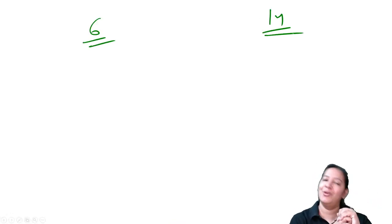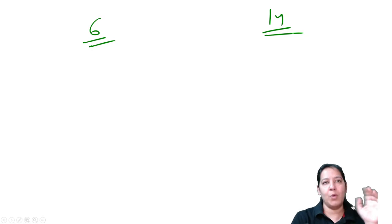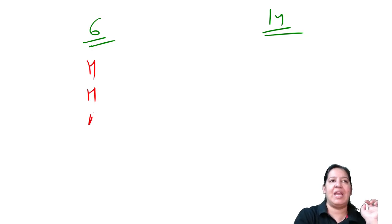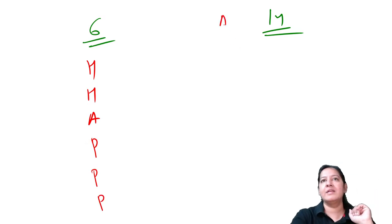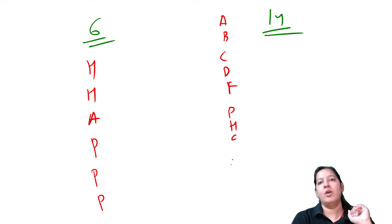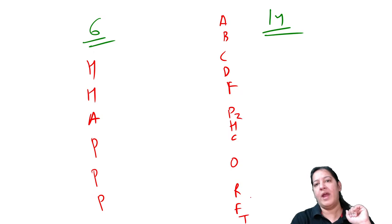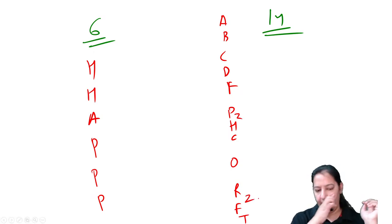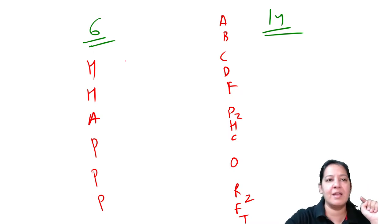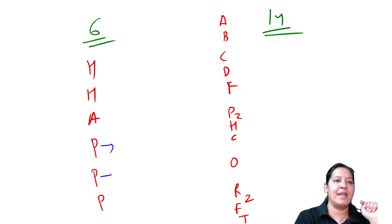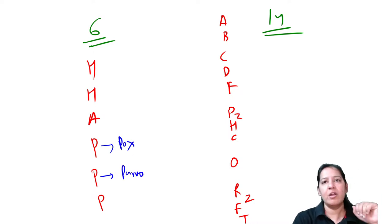So there are 6 DNA viruses and 14 RNA viruses. The mnemonic for DNA is HHAPPP. The mnemonic for RNA is ABCDF PHCORFT with P2 and R2. Among DNA: smallest is Parvo, largest is Pox - both P. Among RNA: the two P's - smallest is Picorna, largest is Paramyxo.